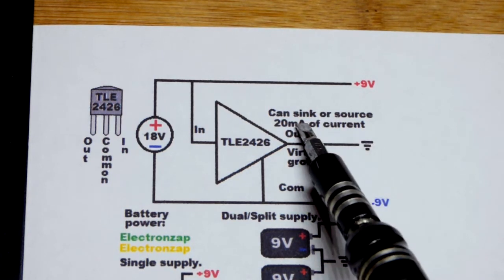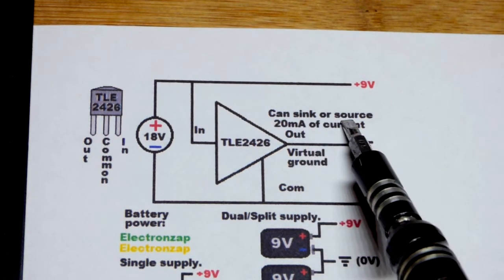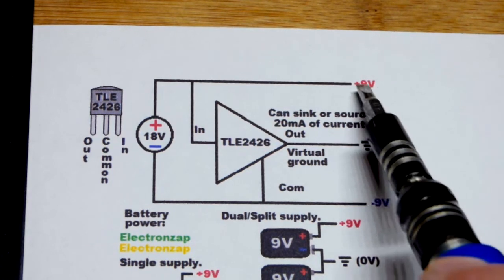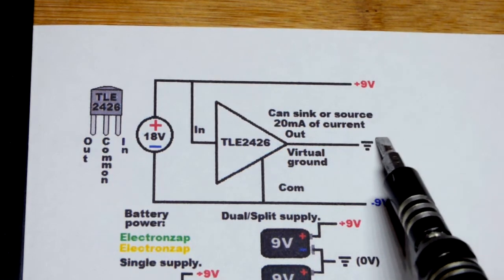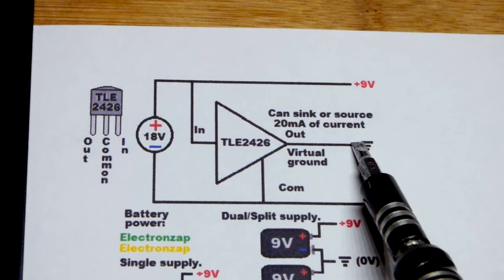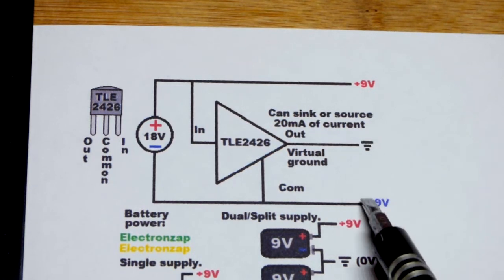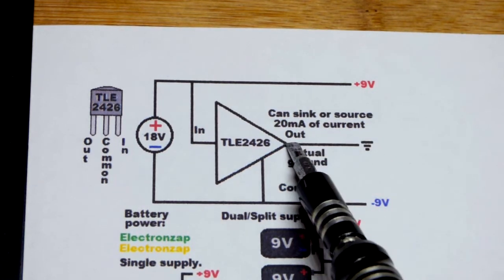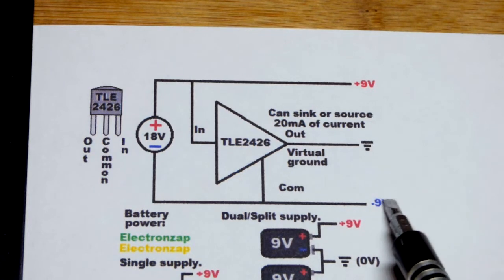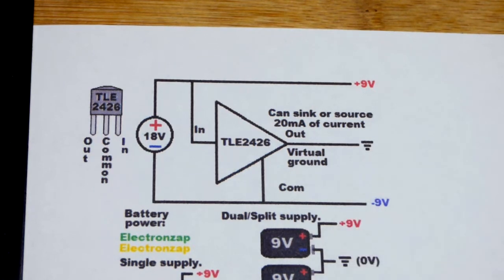That makes it so that you can sink or source current. So most of the time we're sinking current into ground from positive side of the power supply. But now we have the option of ground being the source of current for the negative side of the power supply.